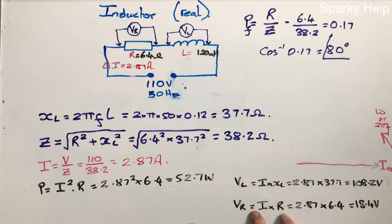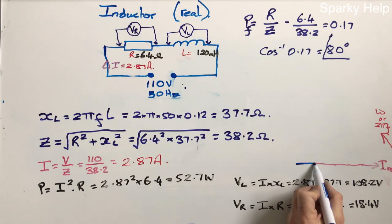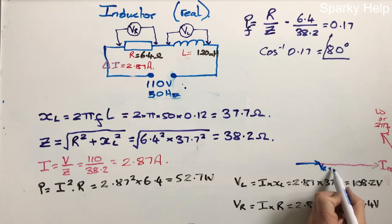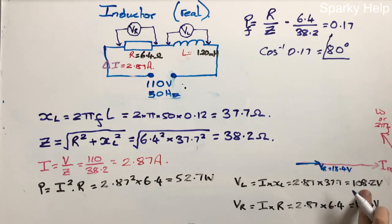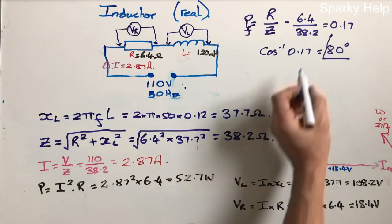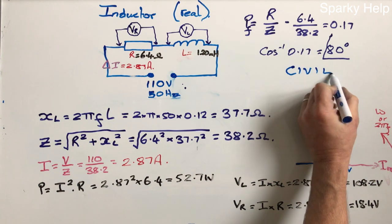So VR, the volt across the resistor, is 18.4. Now that is in phase, so if I was to draw this to scale, it would be here. So this is VR in relation to the I, which equates to 18.4 volts. VL is 108.2. Now that is out of phase in the circuit. And the way we'd know which direction they go is because we can use something called CIVIL.